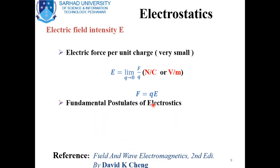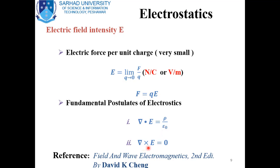Now we write the fundamental postulates of electrostatics. The first postulate is related with the divergence of the electric field: the divergence of the static electric field intensity is equal to ρ/ε₀, where ρ is the volume charge density and ε₀ is the permittivity of free space. The second postulate states that the curl of E is equal to zero. The first postulate tells us that the electric field is not solenoidal unless ρ equals zero. These are the differential forms of the postulates related to electrostatics.